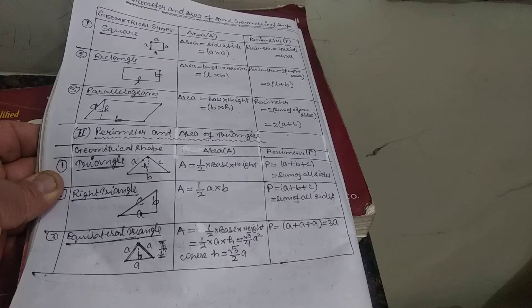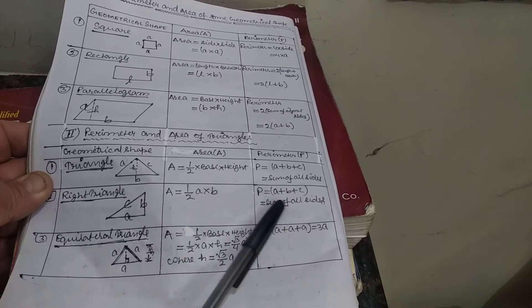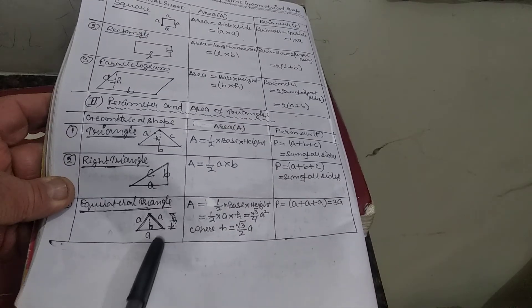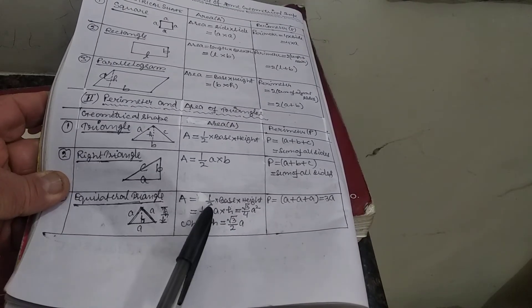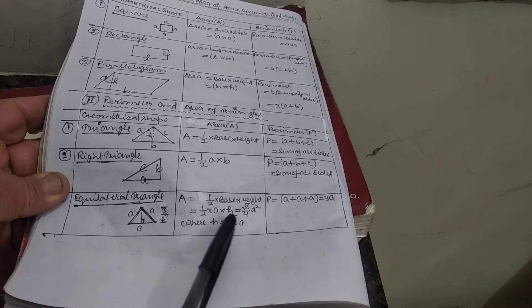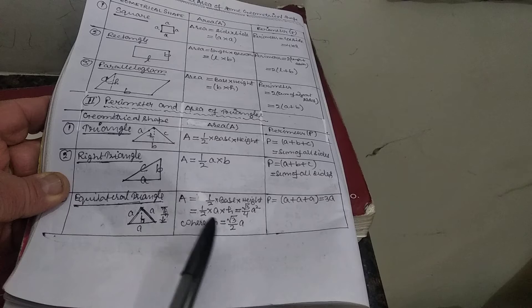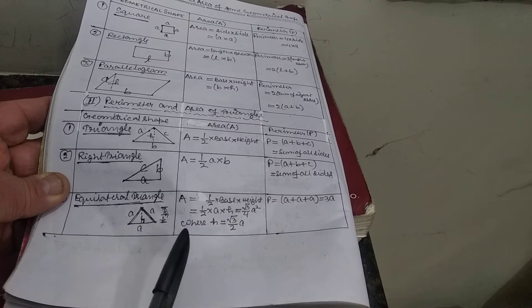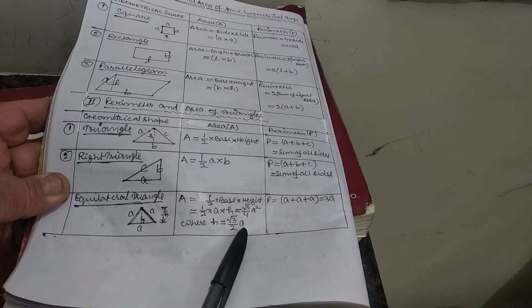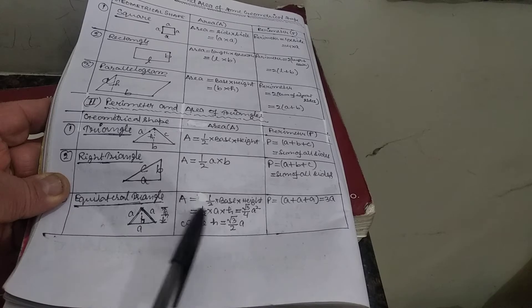For a right triangle, area equals half × A × B, and perimeter equals A + B + C, the sum of all sides. For an equilateral triangle with all sides equal to A, area equals half × base × height, which simplifies to (√3/4) × A², where height H equals (√3/2) × A. The perimeter of an equilateral triangle equals A + A + A, that is 3A.